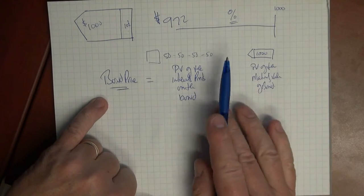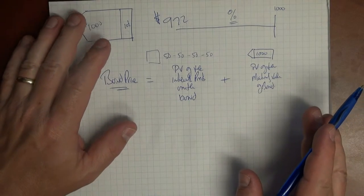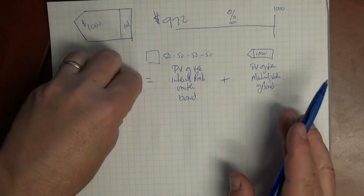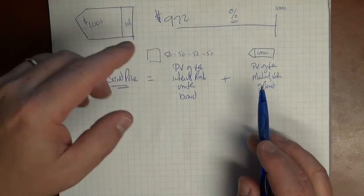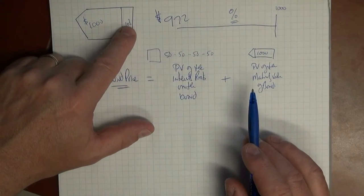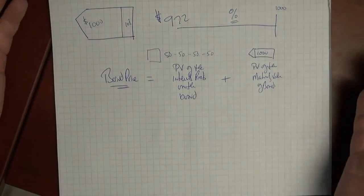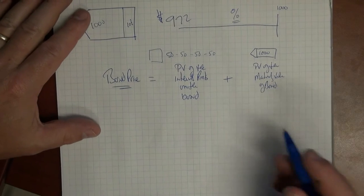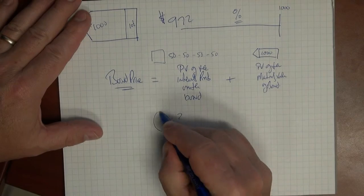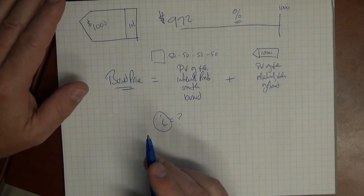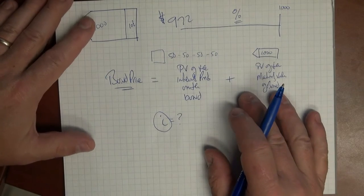Now, in this particular scenario here, where we're looking at yield to maturity, we know the bond price. It's $972 for what we're selling it. We know so many other things too. We know, for example, what the coupon rate is. We know what the market rate is, what is the market paying. Really, the only thing that we don't know is the i value, the interest.